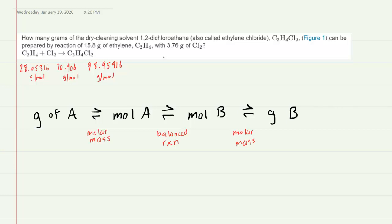Our next step is to follow the roadmap listed below, and what we'll do is we'll convert the number of grams of each reactant into the number of grams of the product. So we're actually going to set up two calculation strings, as you'll see, one based on the 15.8 grams of ethylene, and one based on the 3.76 grams of chlorine.